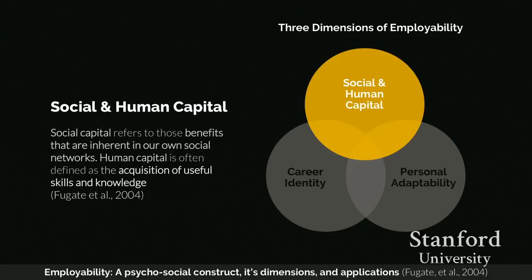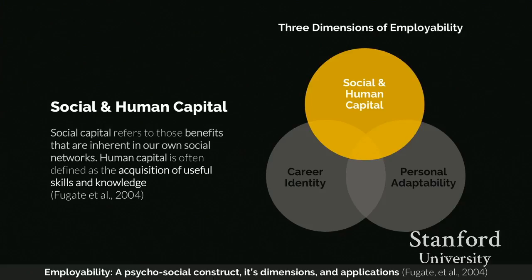Social capital refers to those benefits inherent in our social networks. You're here at Stanford — you have access to awesome connections, and some of you may have chosen to attend because of the social capital you gain here. Human capital is defined as the acquisition of useful skills and knowledge, which can be used to create economic value for you, your employers, and your community. Education and experience are the strongest predictors of career progression.